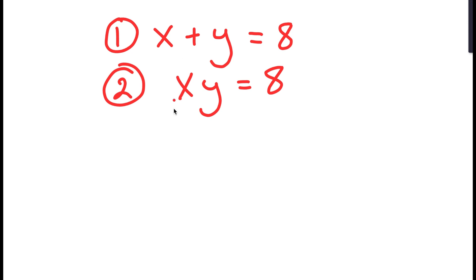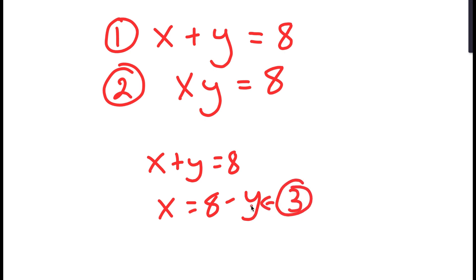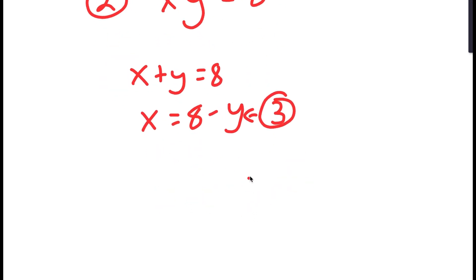From equation 1, let's get one of the values. I'm going to get the value of x. So if x plus y equals 8, then this means that x is equal to 8 minus y, and we can label this as equation 3.